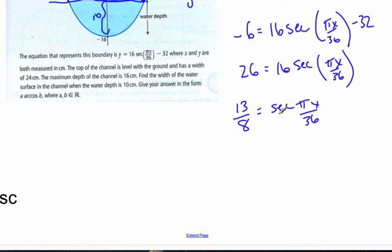Secant is 1 over cosine. So if I flip this side to 8 over 13, it's going to be the same as cosine of pi x over 36.